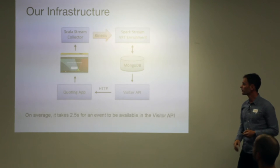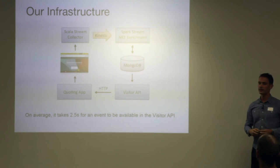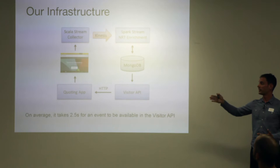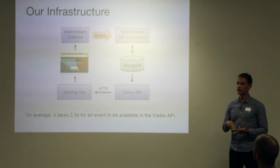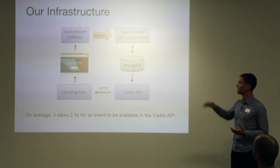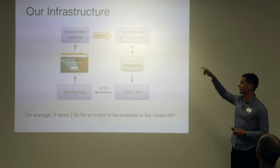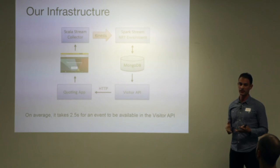So how does it work? Down on the left we have the quoting app — basically the app that shows the questionnaire, collects the answers, and quotes, just showing and displaying the normal web pages. When this happens, we have the JavaScript tracker that keeps sending events. And we have our Spark Streaming enrichment up there, and we store a state in MongoDB — concretely, we store all the events for all active sessions.